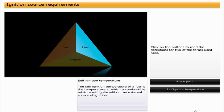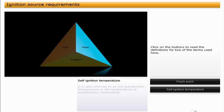The self-ignition temperature of a fuel is the temperature at which a combustible mixture will ignite without an external source of ignition. It is also referred to as the auto-ignition temperature, or the temperature of spontaneous combustion.